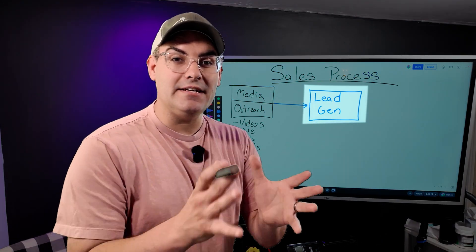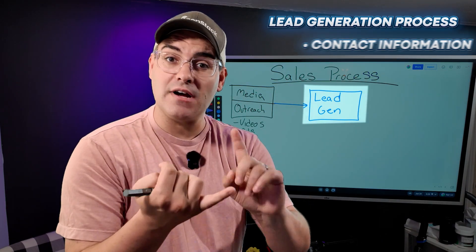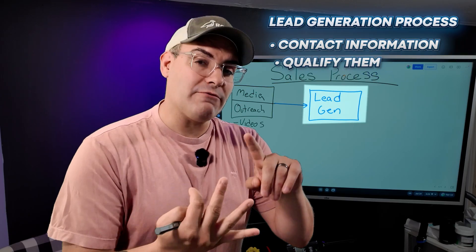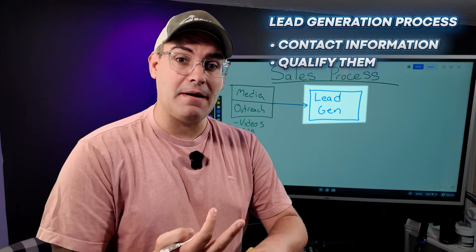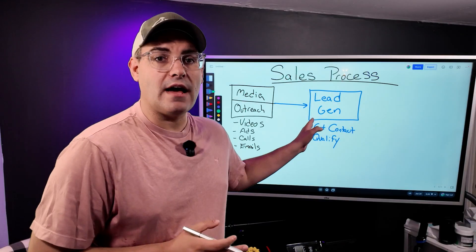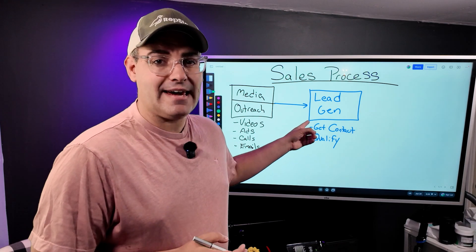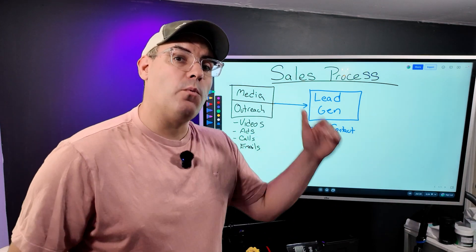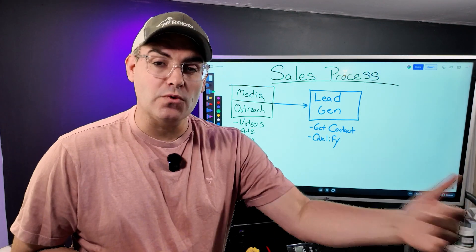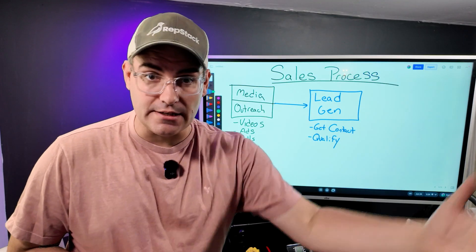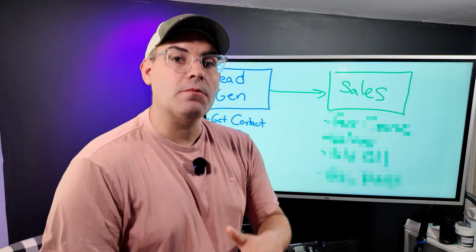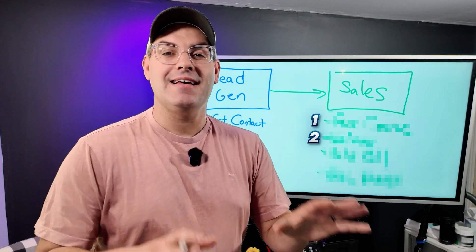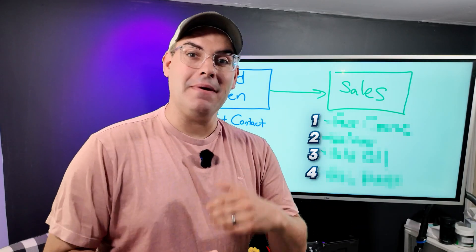Then we have to send them through some sort of lead generation process. We have to either get their contact information if we don't know it yet, or qualify them somehow with a discovery script. From there, we're going to send them through the sales process to actually close the deal. Once you've sent your customer over to the sales process, there are four main ways that they can become a customer.